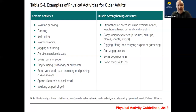Some examples of physical activities for older adults, straight from the physical activity guidelines, include aerobic activities such as walking, hiking, dancing, swimming, aerobics classes, jogging, cycling — whether indoor on a stationary bicycle or outside — and yard work such as raking and pushing a lawnmower. Sports such as tennis, basketball, and walking during a golf outing also have an aerobic component.